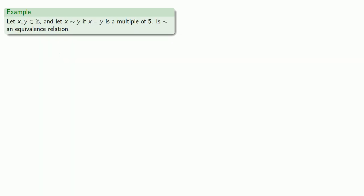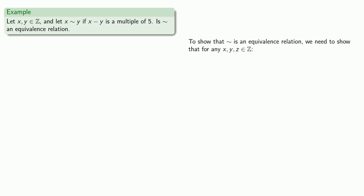That relation can be anything we want. So let x and y be integers, and let x be related to y if x minus y is a multiple of 5. Is this relation — let's call it squiggle — an equivalence relation? To show that squiggle is an equivalence relation, we need to show that for any integers x, y, and z: x squiggle x; if x squiggle y, then y squiggle x; and if x squiggle y and y squiggle z, then x squiggle z.